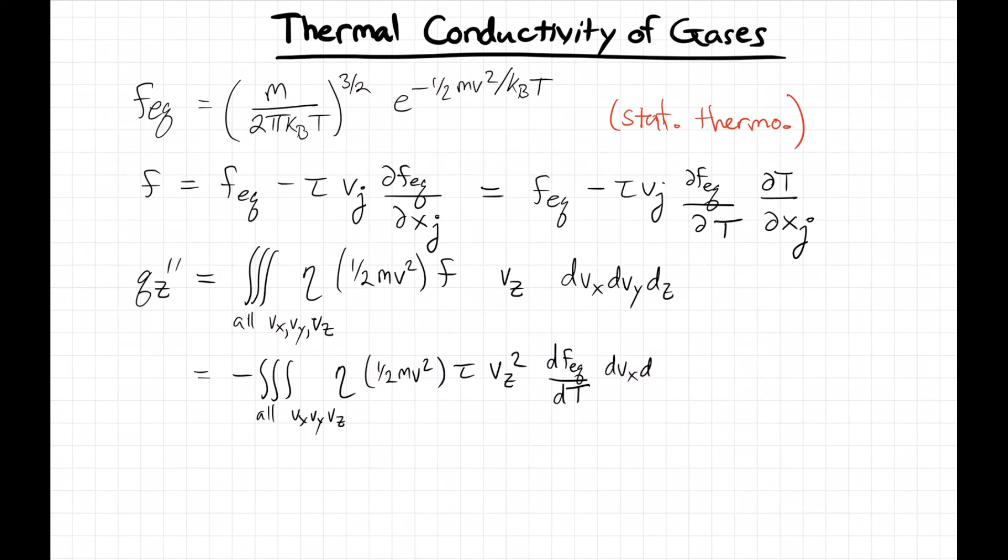We can use the Boltzmann equation solution under the relaxation time approximation to write that out. You'll see there are two terms: one that involves the gradient portion and one that involves the equilibrium distribution itself.